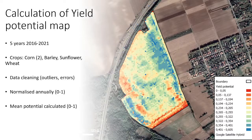A yield potential map was calculated based on the last five years of yield maps across different crops. After data cleaning, removing outliers and errors from the data, each year was normalized and the mean value was calculated to represent the yield potential.